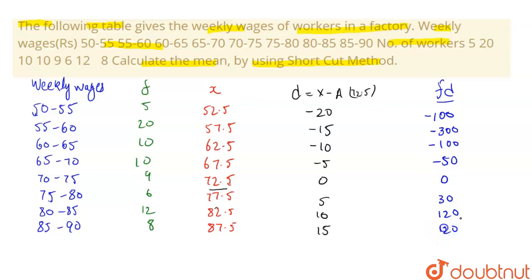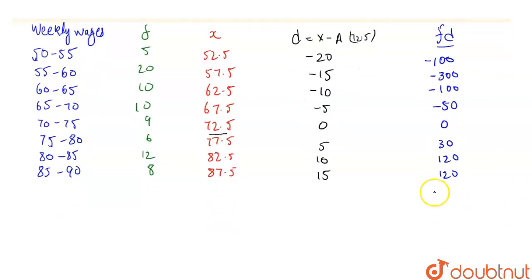Now we'll sum up these columns. If we sum up the fd column, this comes out to be minus 280, and the total frequency is 80.